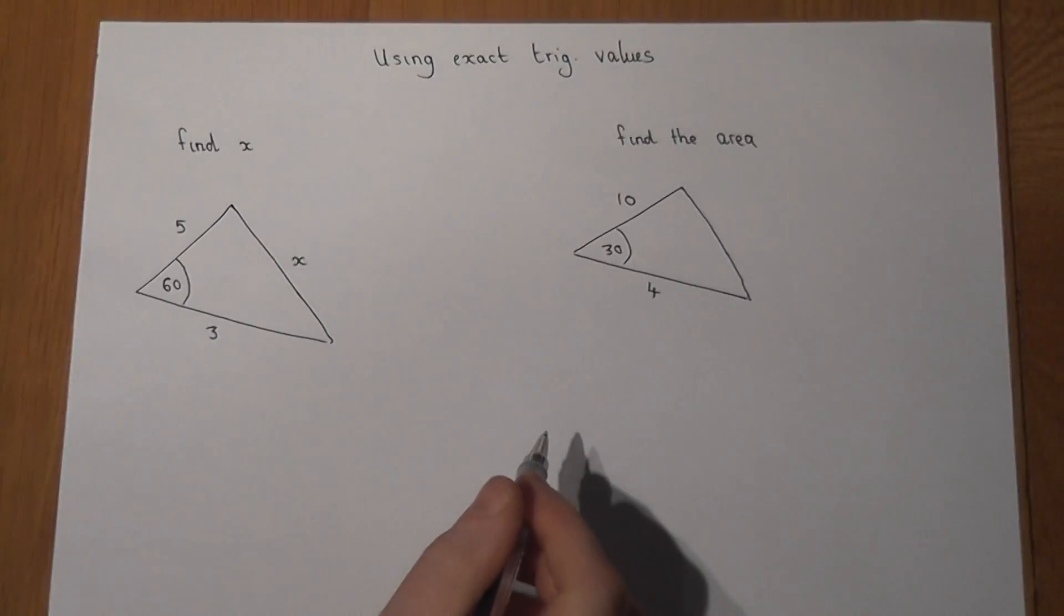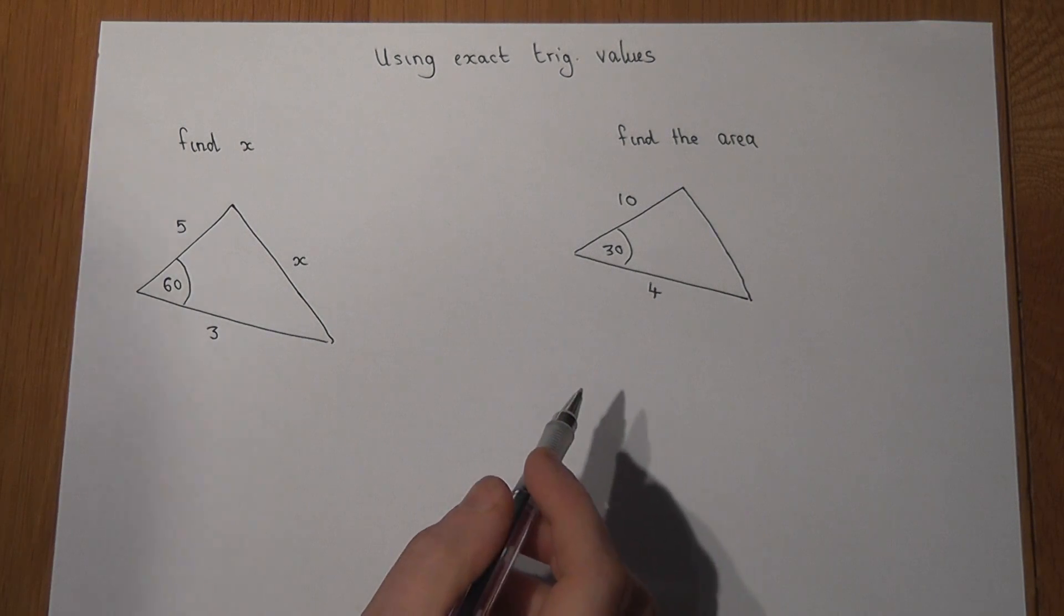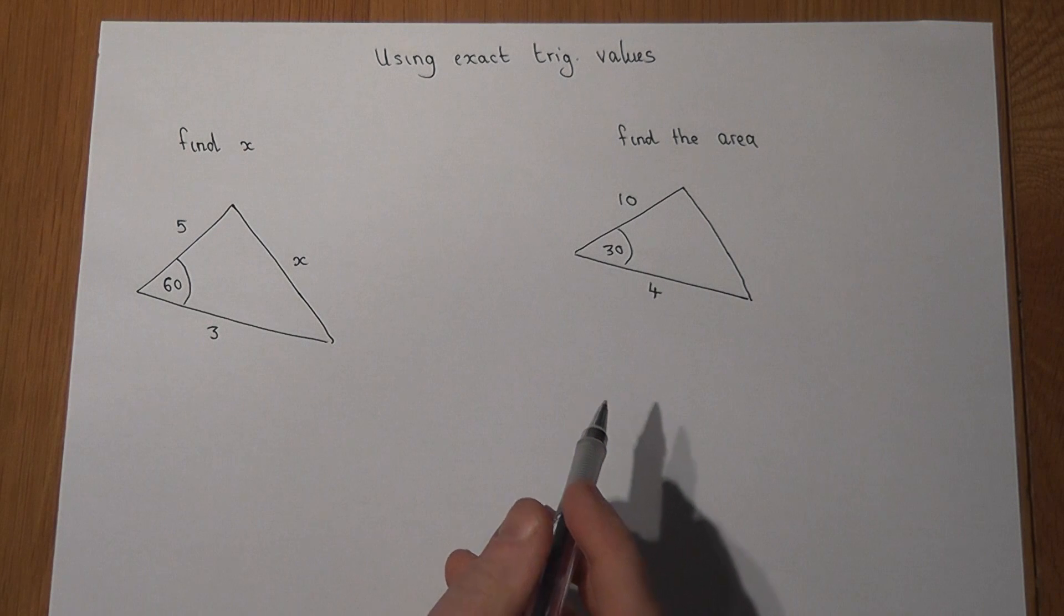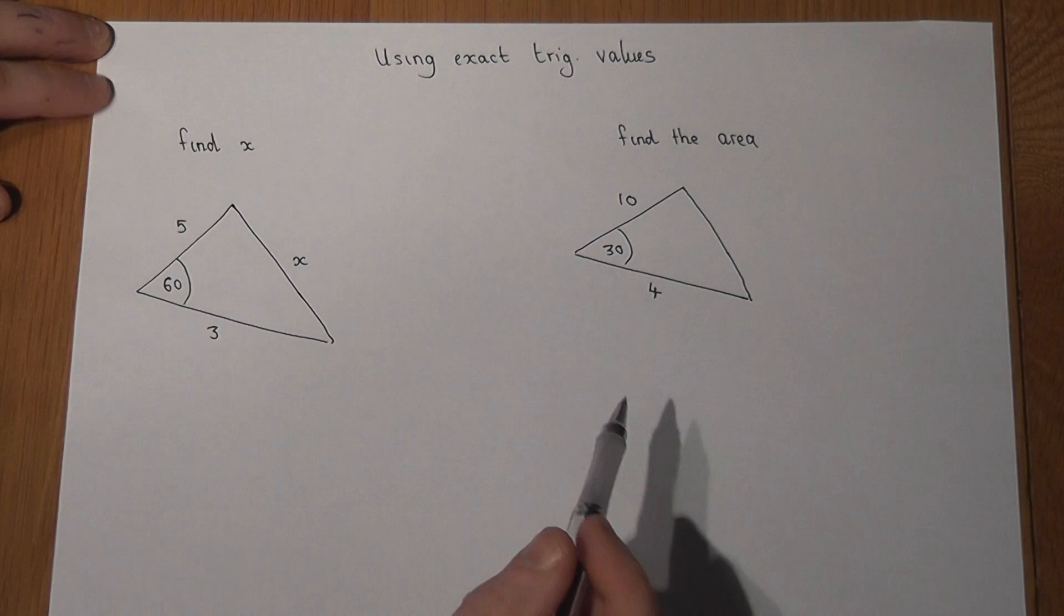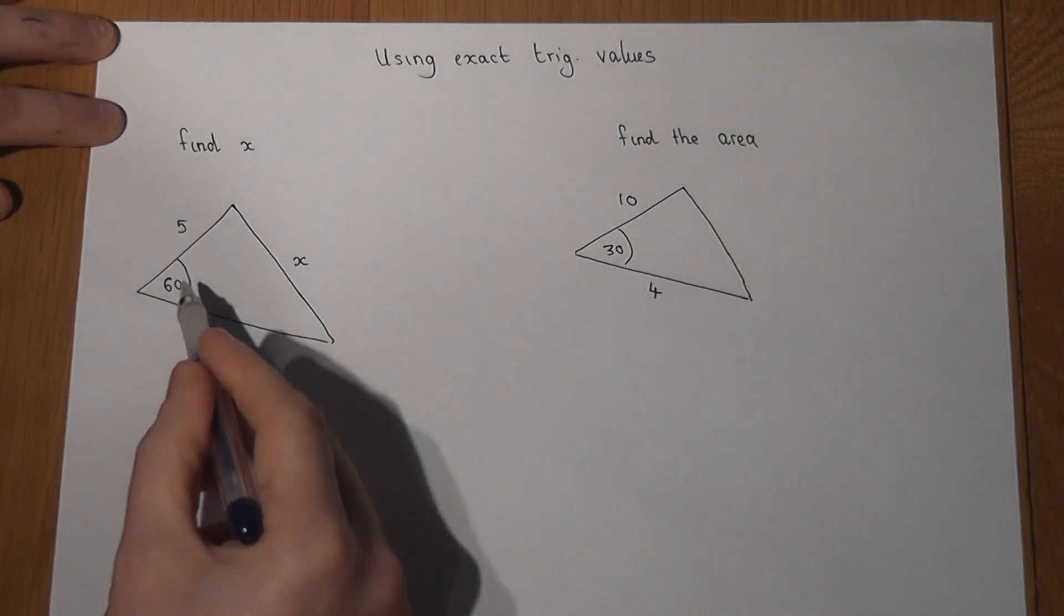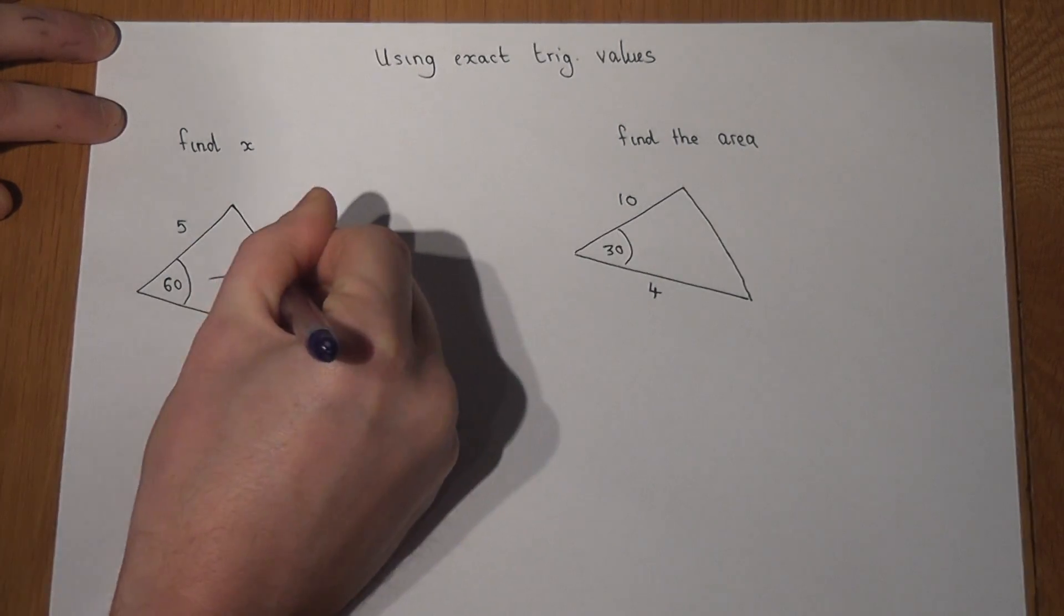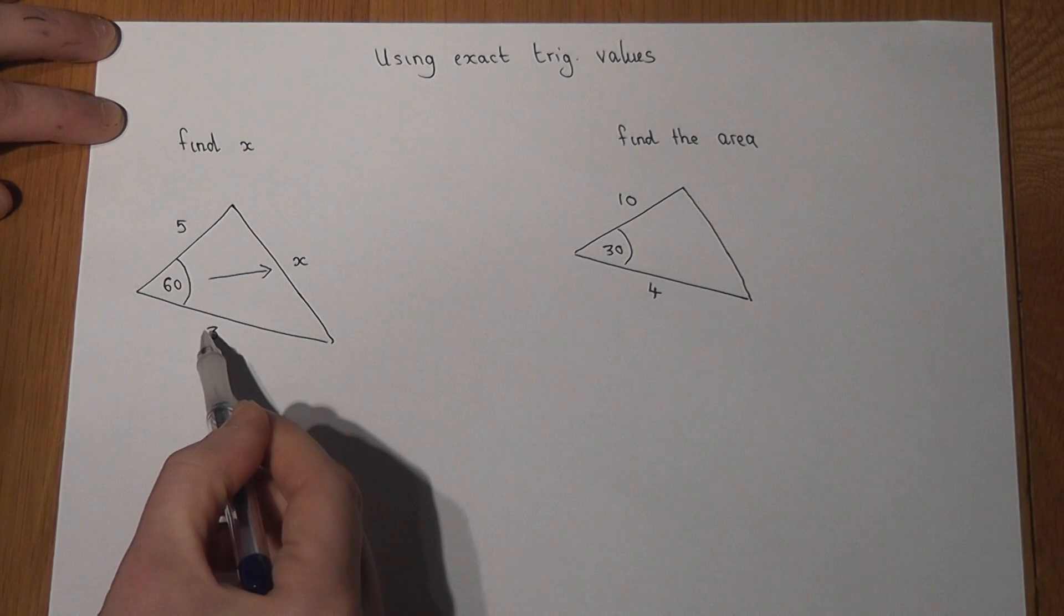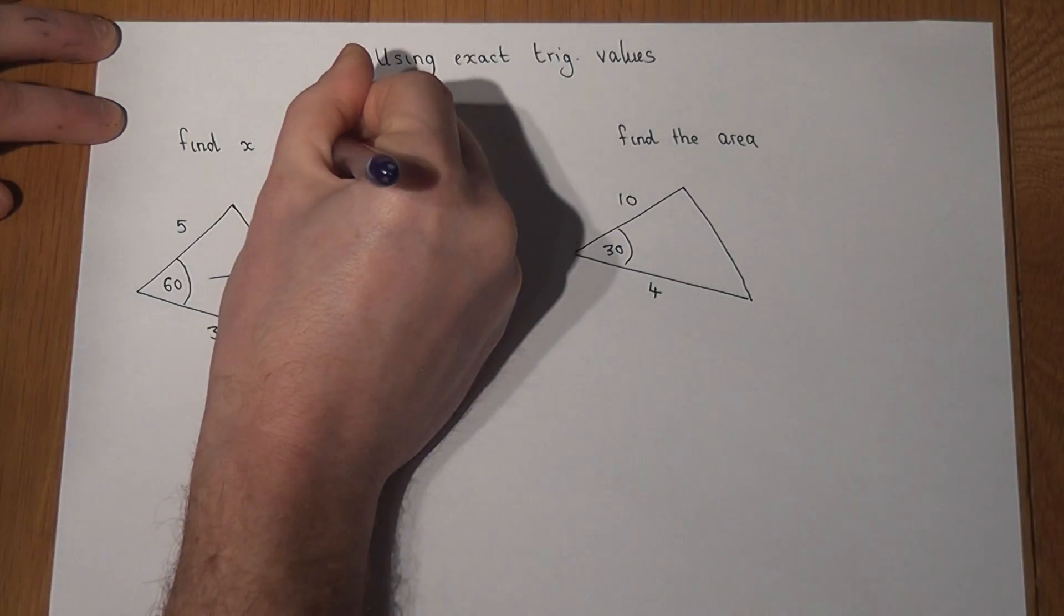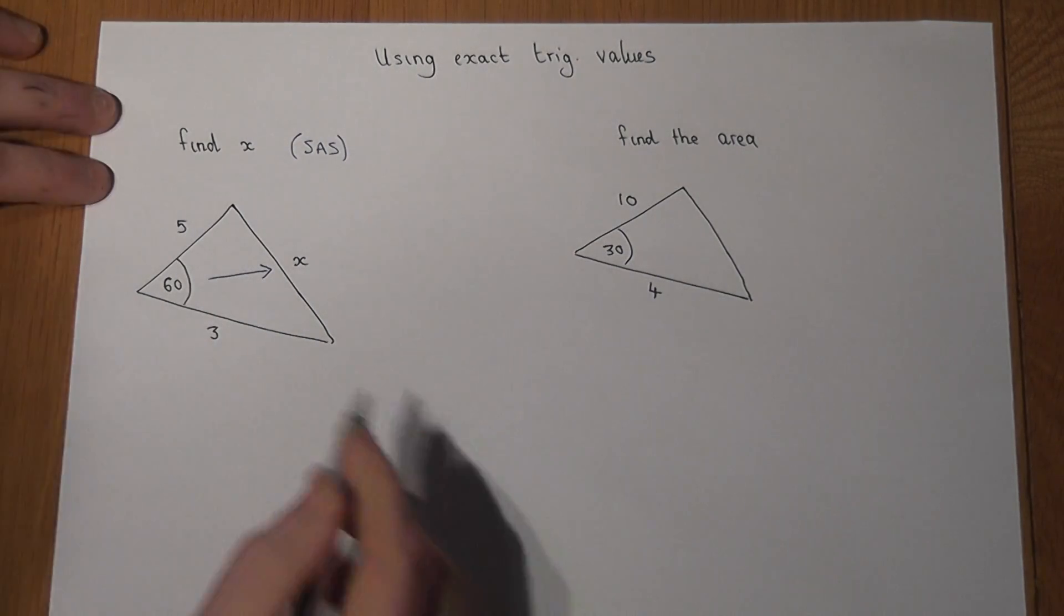This video looks at two key trig equations where we don't have a calculator, using some key values that you need to memorize. In the first example, we're asked to find a length X, which is the opposite a given angle, and we know a side-angle-side, or SAS.